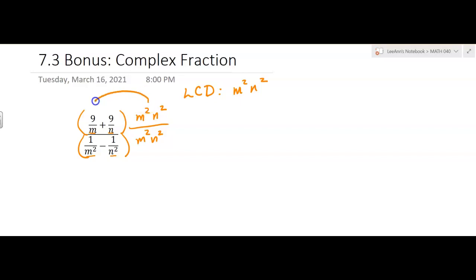Now we're going to distribute. So in the numerator, I'm going to have 9 M squared over M plus 9 N. Oh, I forgot the N squared. Sorry. 9 M squared N squared over M plus 9 M squared N squared over N.